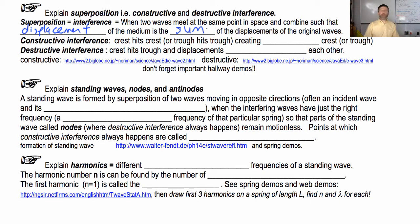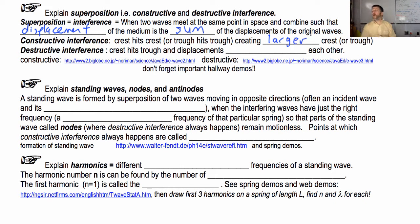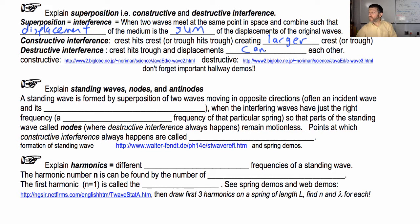Constructive interference is where a crest hits a crest, or a trough hits a trough, creating a larger crest or a larger trough. Destructive interference, by contrast, is where a crest hits a trough and the displacements cancel each other.